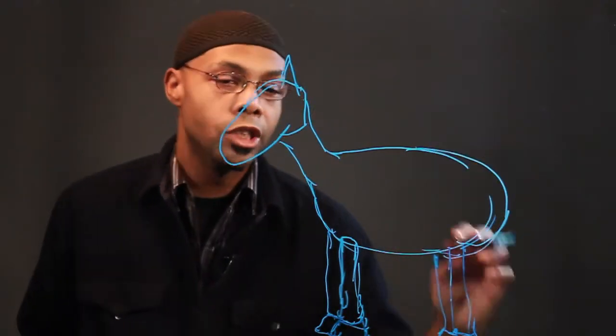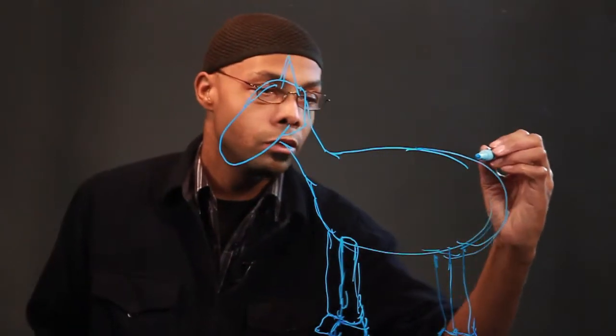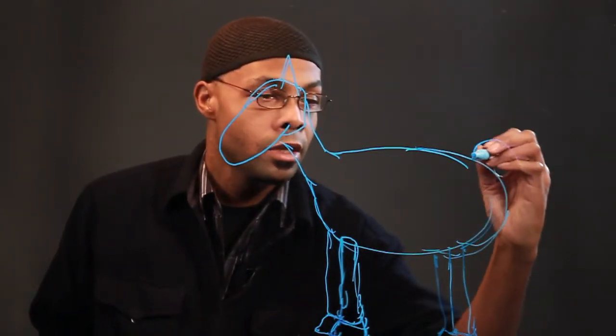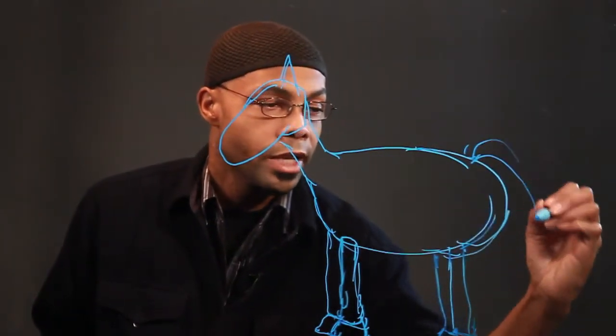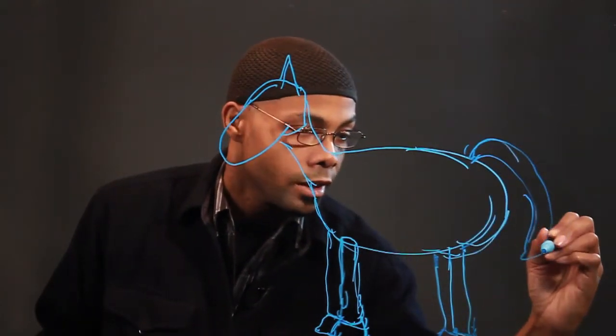Now what you have here is the general shape of a horse, but you want it to look a little more like a horse, like a little cartoony horse. So give it a tail. A nice tail.